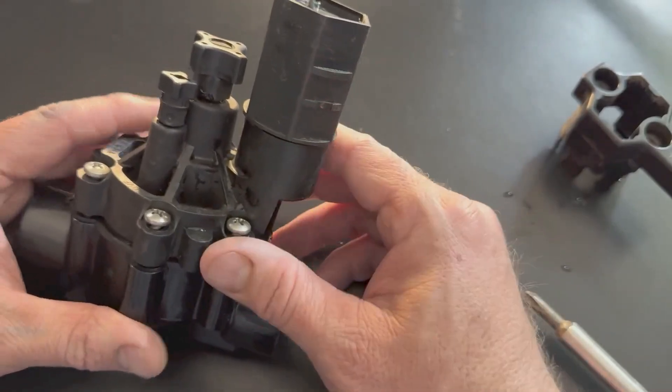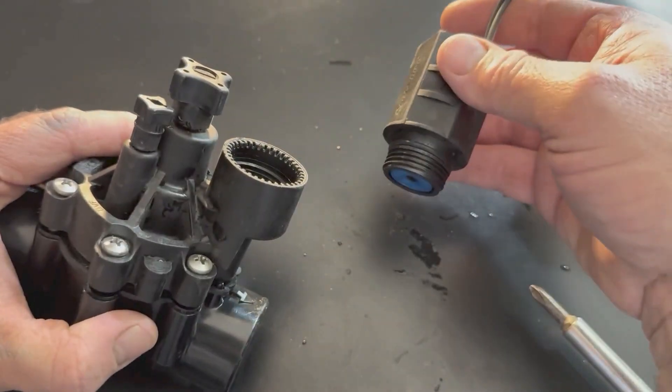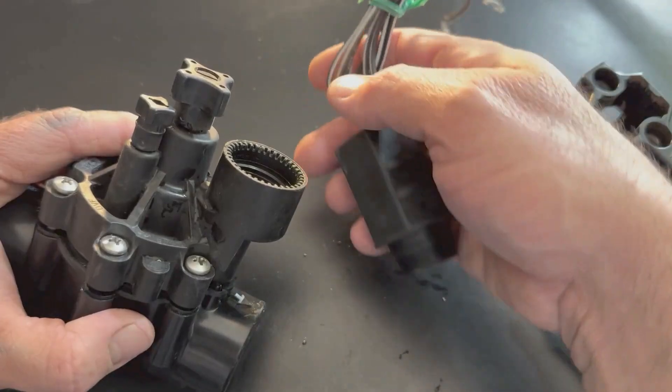A lot of times what I'll do if I've got to take this valve apart, I'll take the solenoid off and set it aside. It may be still wired in, so you kind of pull it aside.